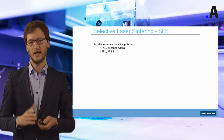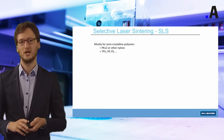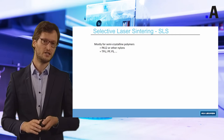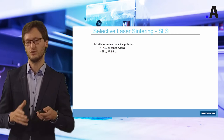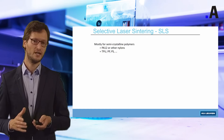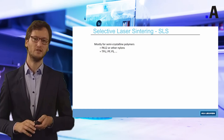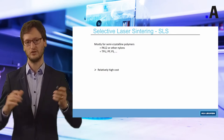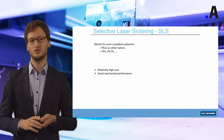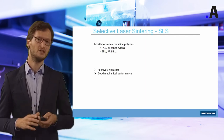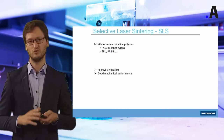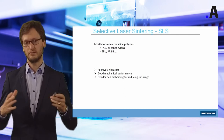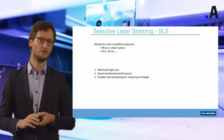SLS is mainly used for nylons or polyamides and can also be used for TPUs, polypropylene or polystyrene. However, the market is dominated by polyamide 12, and this is a disadvantage — it is less easy to process many different polymers. The cost is also quite high because you need the CO2 laser and a complex machine. On the other hand, mechanical performance is very good; for some applications we can even reach the same mechanical behaviour as conventionally produced plastics.